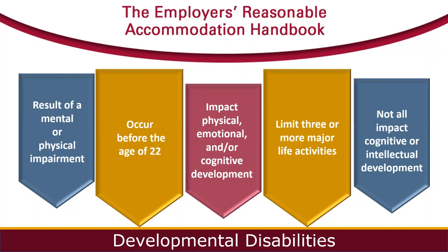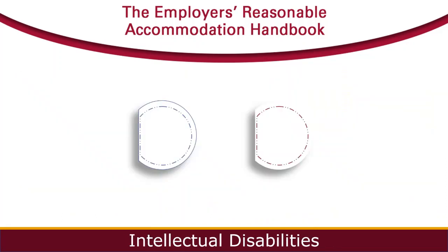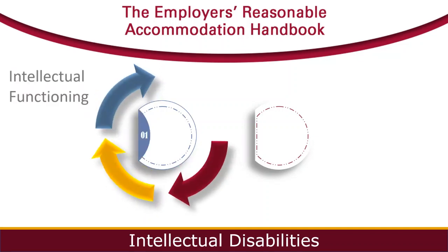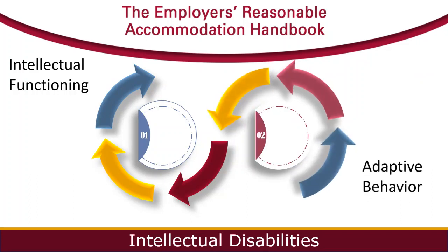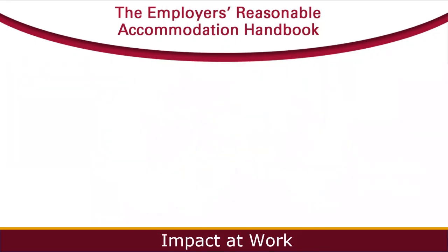While an intellectual disability is considered a developmental disability, not all developmental disabilities impact a person's cognitive or intellectual development. Some impact a person's physical or emotional development. Cerebral palsy is an example of this because it might present itself physically but not intellectually. We will discuss physical disabilities in greater detail in next month's webinar, so today our focus is to better understand intellectual disabilities. An intellectual disability presents during a person's developmental period and can be caused by physical, genetic, or social factors. It can also be a result of a head injury, a stroke, an illness, or an unknown cause. It impacts a person's intellectual functioning and adaptive behavior.